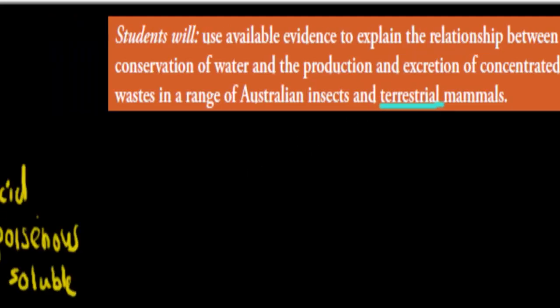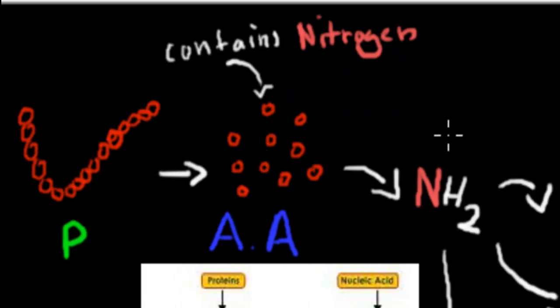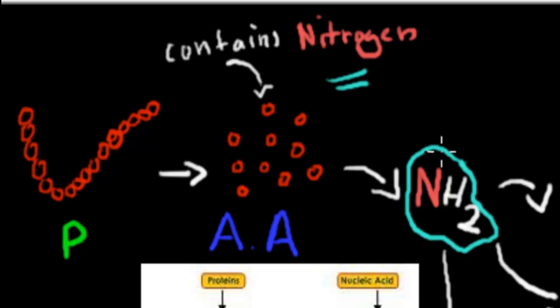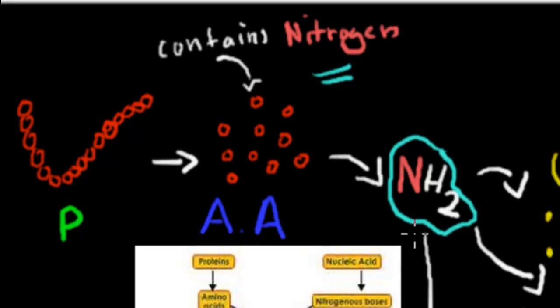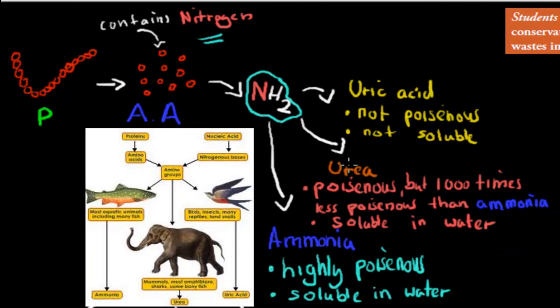Before we start, I'm going to go over quickly what nitrogenous waste was again. Protein or nucleic acid breaks down to amino acids. Amino acids contain nitrogen. We break down amino acids even further to get the amino group, and that's the molecule we have to get rid of. We can do it in one of three ways: produce uric acid, urea, or ammonia. I'm quickly going to go over the characteristics of each.